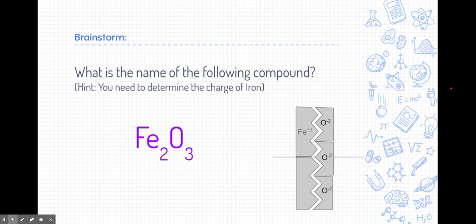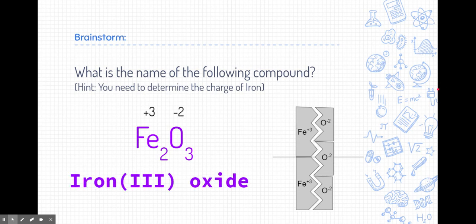Well, if you guessed that the charge is positive three, then you'd be correct. Each of the irons have to have a charge of positive three. So the name of this compound includes that. It's iron Roman numerals three oxide, because the iron in this problem has a positive three charge.